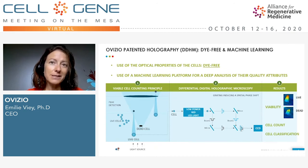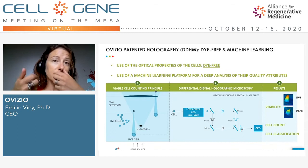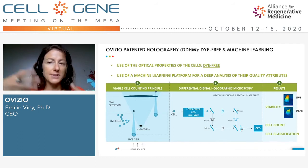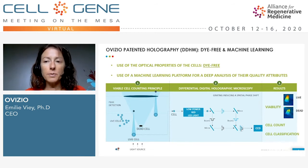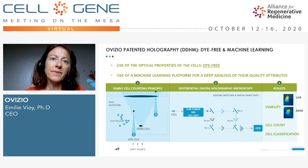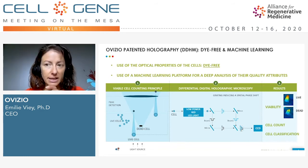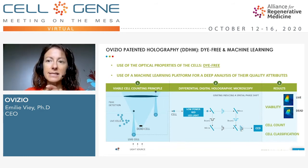To make a long story short, holography is based on the optical properties of the cells to diffract the light. Depending on the cell status — let's say alive, dead, infected, or entering into apoptosis — the light will be diffracted in a different way, and we can digitally reconstruct this signal and then, with the machine learning platform, assess viability, cell counting, and cell classification.